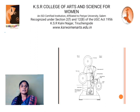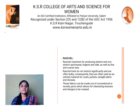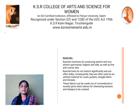Raschel Machine. The Raschel machine is used for producing stretch and non-stretch sportswear, lingerie, and tubes, as well as fine and coarse knits. Raschel knits do not stretch significantly and are often bulky. Consequently, they are often used as outerwear material for coats, jackets, skirts, and dresses. These fabrics can be made out of conventional or novelty yarns, which allows for interesting textures and designs to be created.